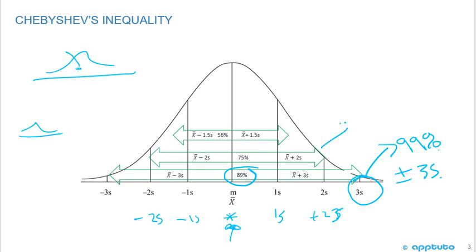then the percentage of observations that will fall under plus or minus three standard deviations is 89%. Similarly, for the normal curve, you're going to have 95% of the observations fall within plus or minus two standard deviations. But under Chebyshev, it's 75%.